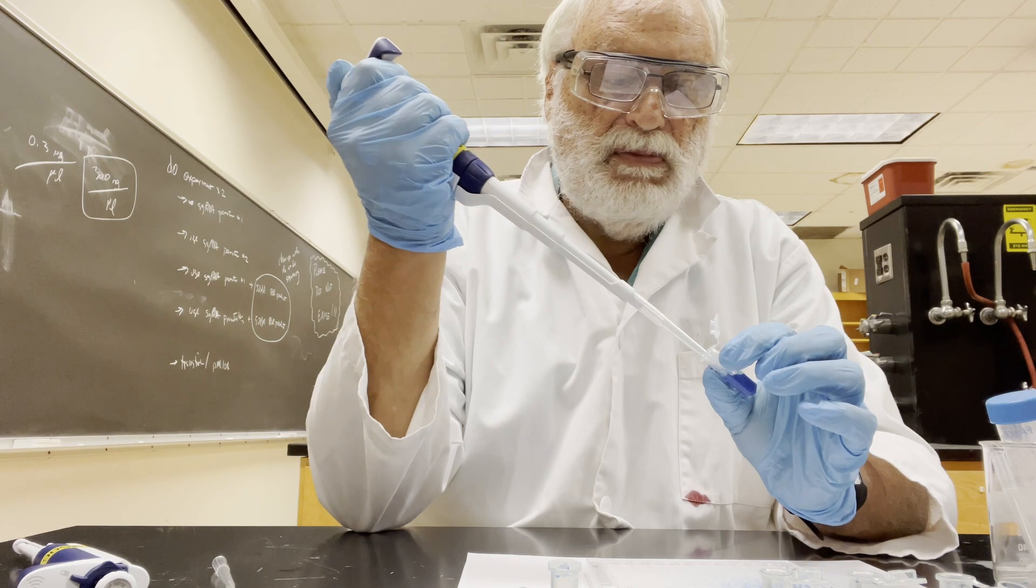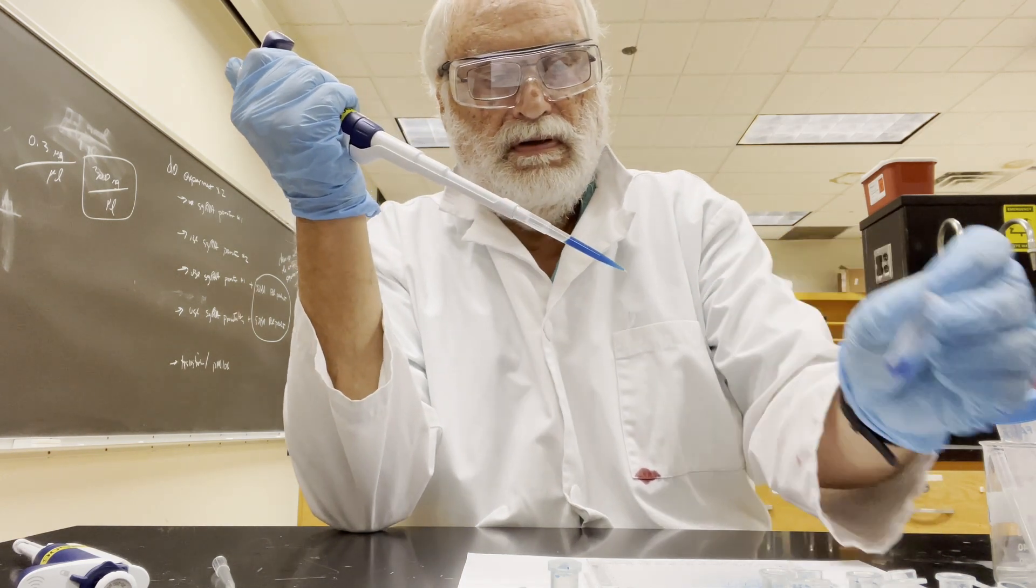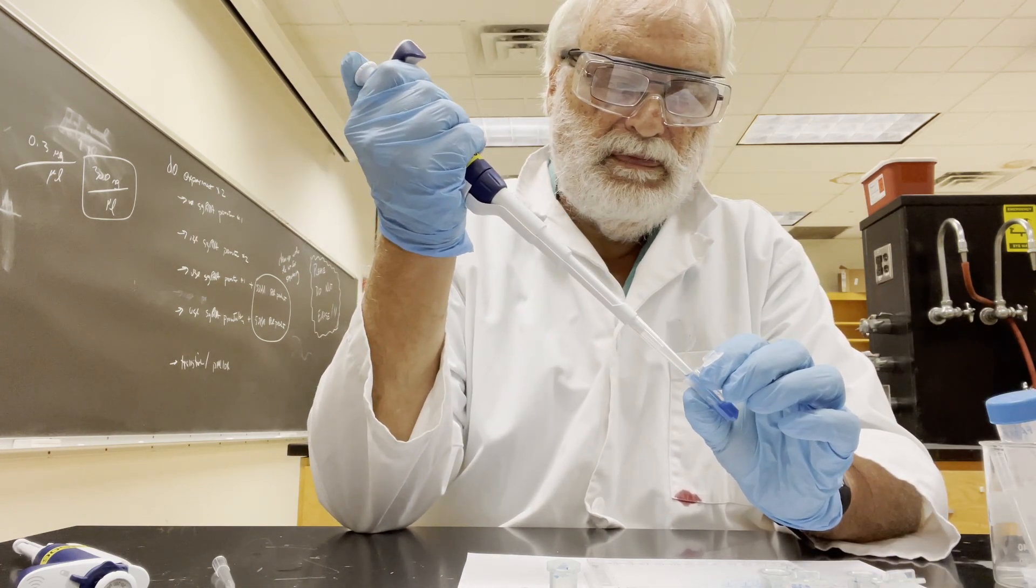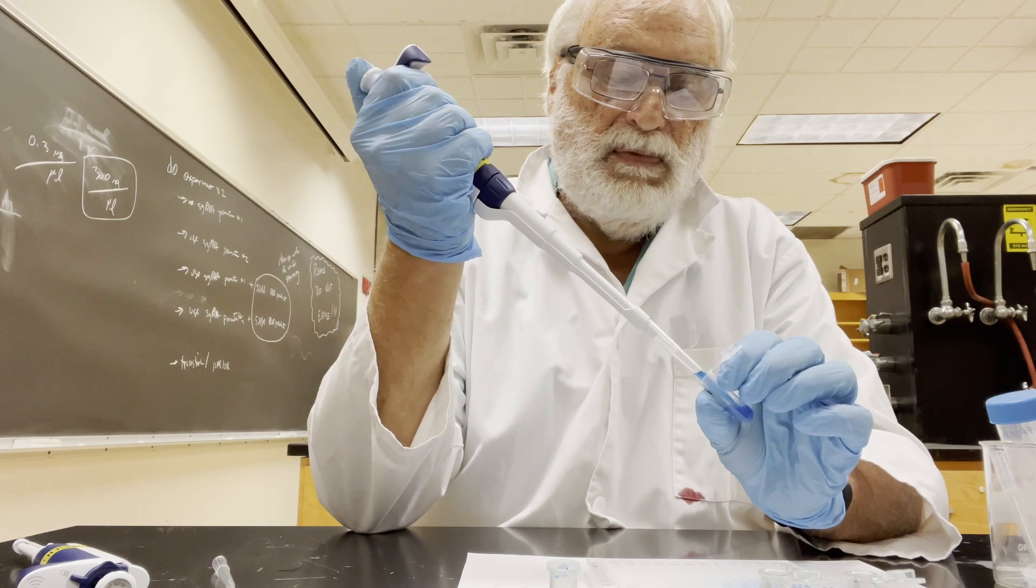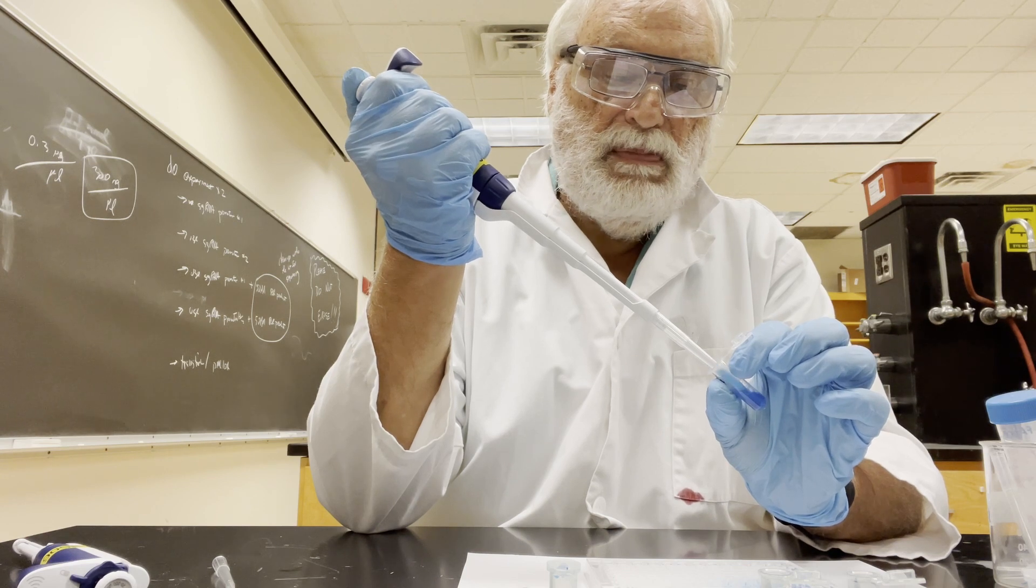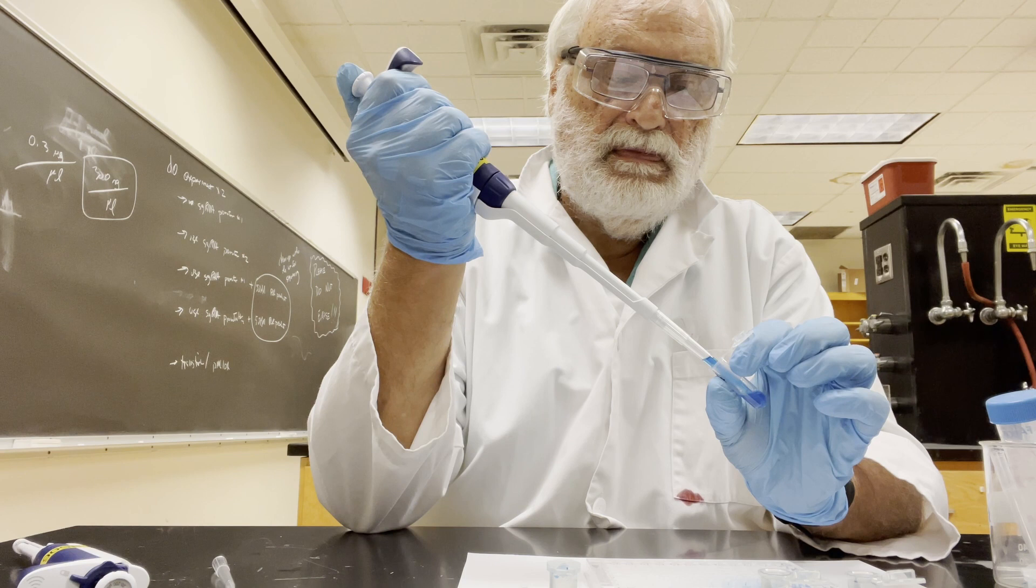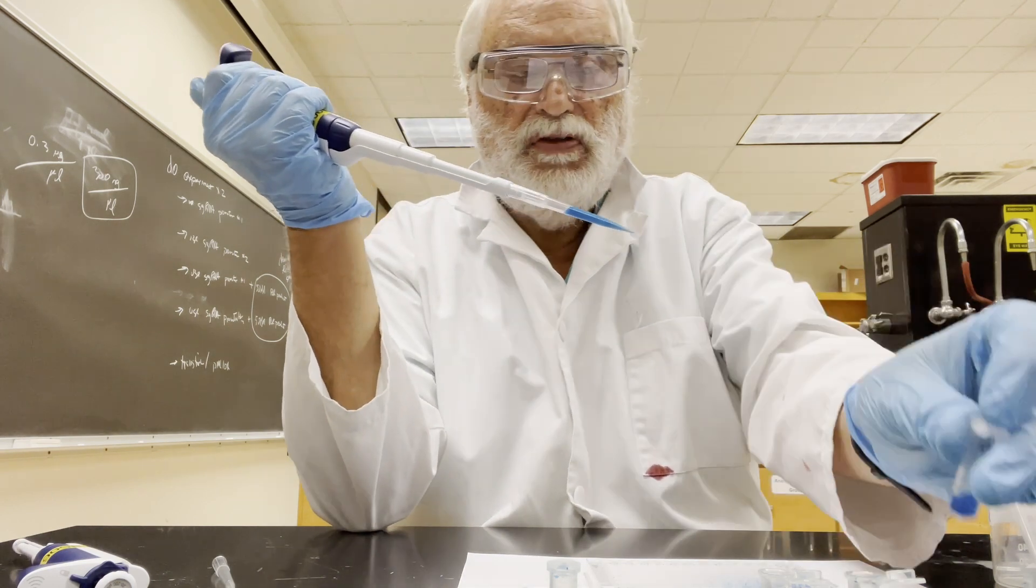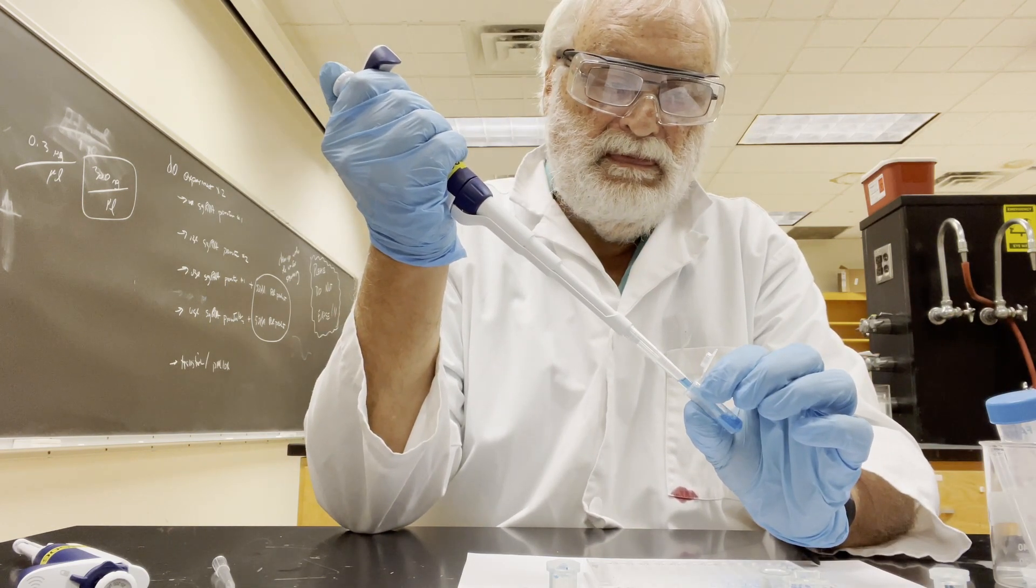Now I'll take a half a milliliter out of this sample and add it to the next tube. What I'm doing is pipette mixing again. My tip is at the very bottom of the tube. So I have a half a milliliter here from the one-fourth, and now I'm going to the one-eighth.